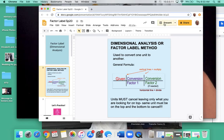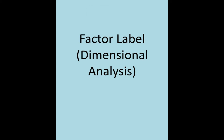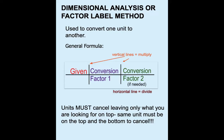Hi everyone, in this video we're going to learn about dimensional analysis or factor label. You'll hear them referred to interchangeably. You're going to need a calculator and your conversion sheet. Dimensional analysis or factor label is used to convert one unit to another — so if you start with 50 grams of something and you want to go to ounces, you need to be able to convert it back and forth.